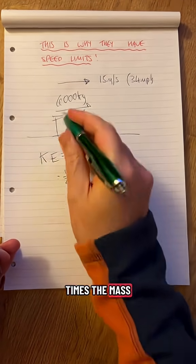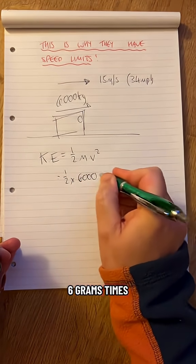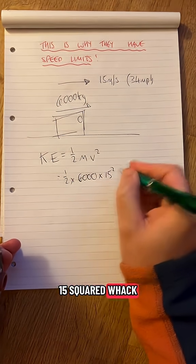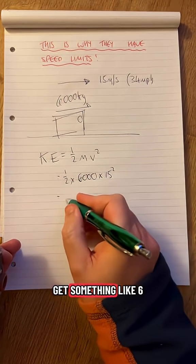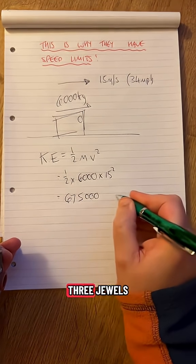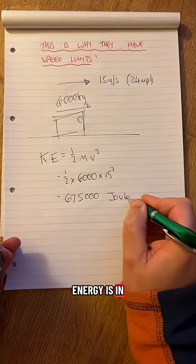Half times the mass, 6000 kilograms, times by V squared. What was V? 15 squared. Whack that in your calculator and you get something like 675,000 joules. That's how much energy is in that truck.